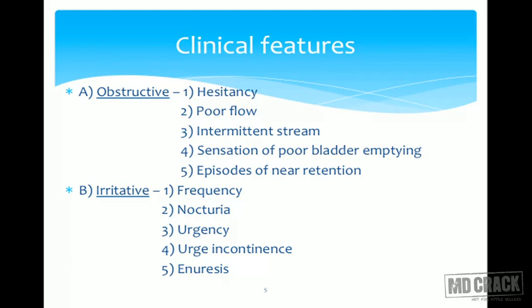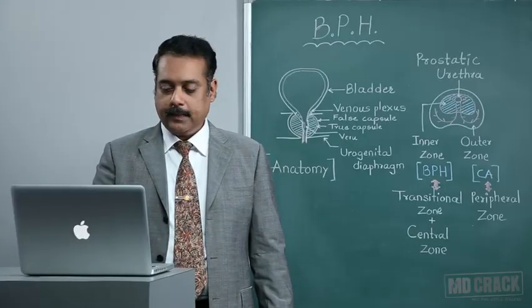The patient will have a sensation of poor bladder emptying because complete bladder evacuation is not possible in a single episode. Something gets retained in the bladder and what the patient mentions is an episode of near retention, not absolute retention. The irritative symptoms — which occur usually earlier — include frequency, the first symptom to appear, followed by nocturia, urgency, urge incontinence, and aneurysis, that is waking up in the night.